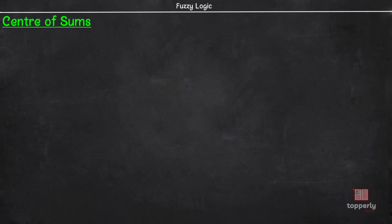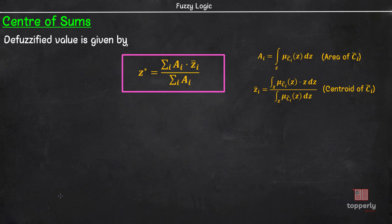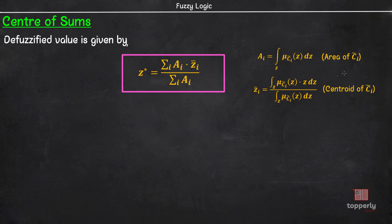The center of sums method involves the algebraic sum of individual fuzzy sets instead of their union. Here, the defuzzified value Z* is given by sigma a_i into z-bar_i, the whole divided by sigma a_i, where a_i is the area of the region bounded by the fuzzy set C_i and z-bar_i is the geometric center of the fuzzy set C_i.